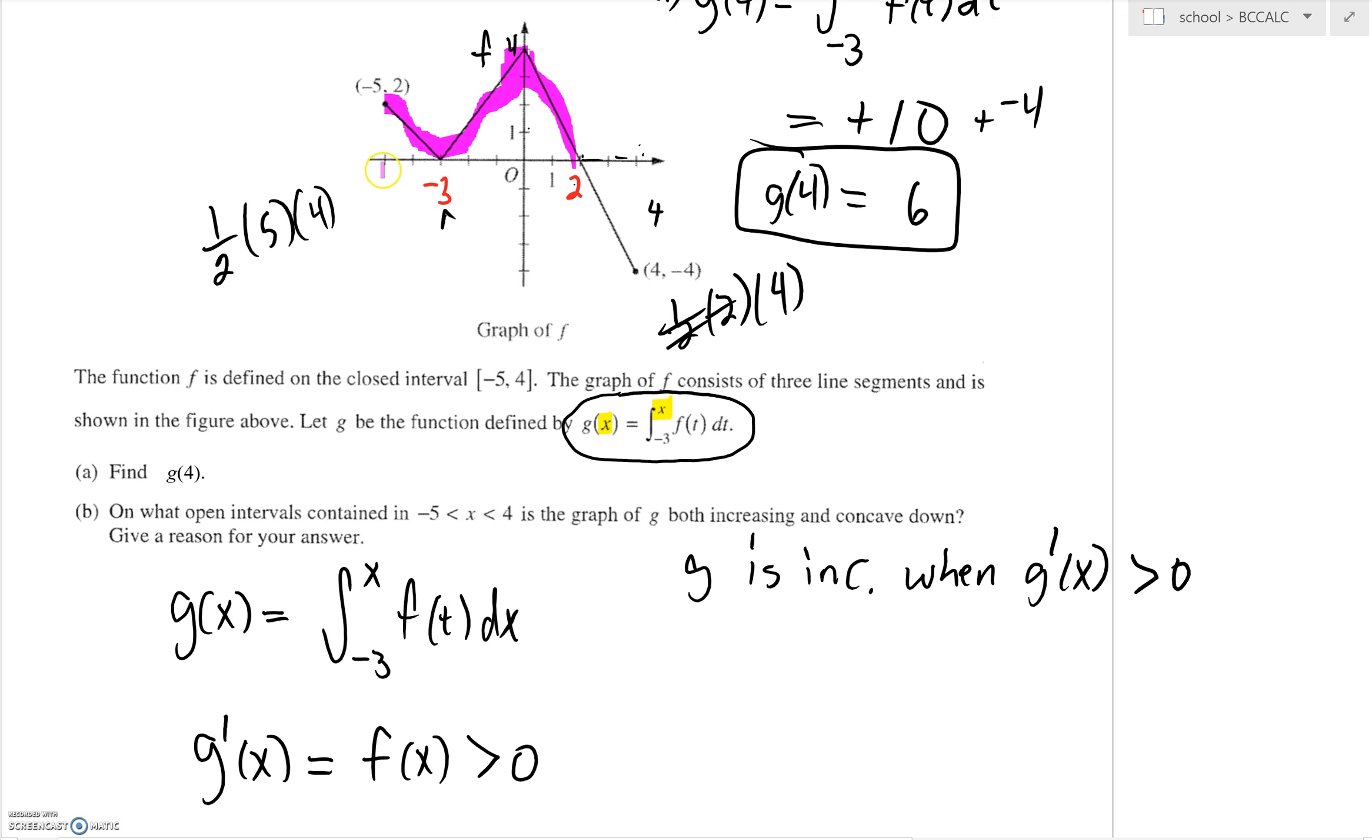You can see you're above the x-axis between negative 5 and 2. So g is increasing on the interval from negative 5 to 2. But that's not our final answer because we also want to know where g is concave down. There's more to this story.